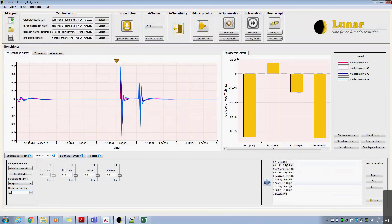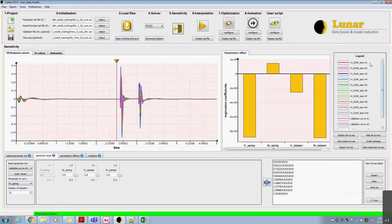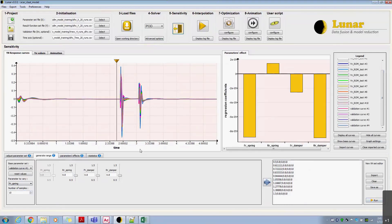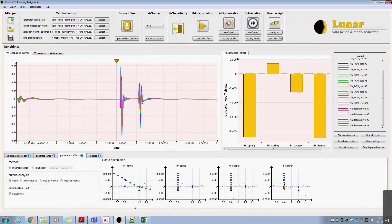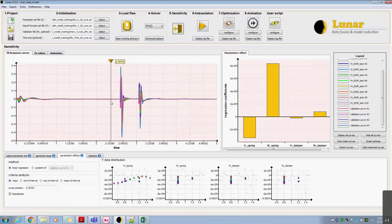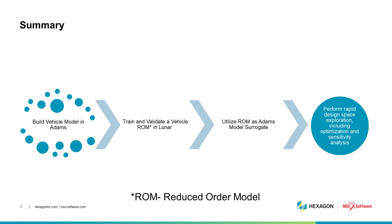We can look at various instances in the transient reduced order model predictions to gauge the sensitivity of the output response to the input parameters. From the value of the regression coefficients, we can see that the front spring is the most dominant parameter during the front impact. This insight can be used in making design decisions to tune vehicle performance. This video shows how reduced order models can be derived from Adams solutions using Lunar from CADLM and how they can be used to explore the design space, gather sensitivity insight, and optimize the response to achieve a certain design target.